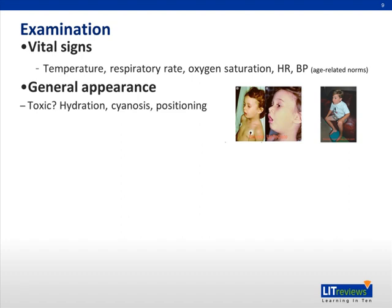Look at the general appearance of the child. Is the child toxic? Are there dysmorphisms? Is the child well hydrated? A hypoxic child may be restless, anxious, or combative. Hypoxia can also manifest as somnolence or lethargy, along with cyanosis if severe. Children may assume positions of comfort to maximize airflow, such as the sniffing position with upper airway obstruction, or tripod position in lower airway obstruction.